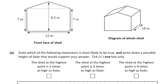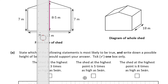The options are: the shed at its highest point is three times as high as Sean, five times as high as Sean, or eight times as high as Sean. The first thing is to find the height of the shed at its highest point. We can clearly see the highest point on the diagram, and we're told it's 8.5 meters above the ground.